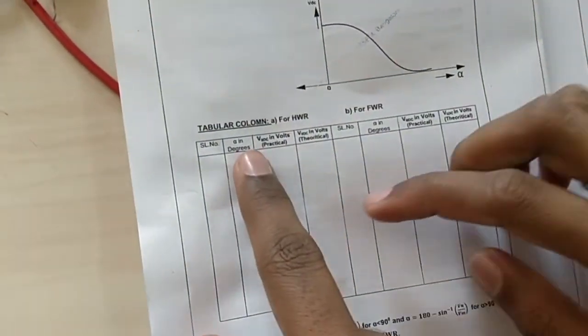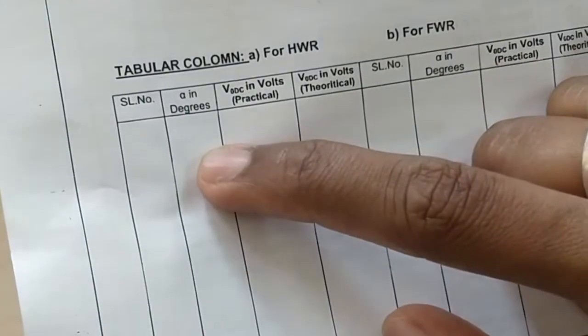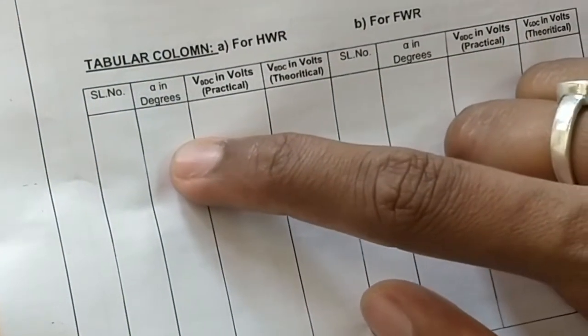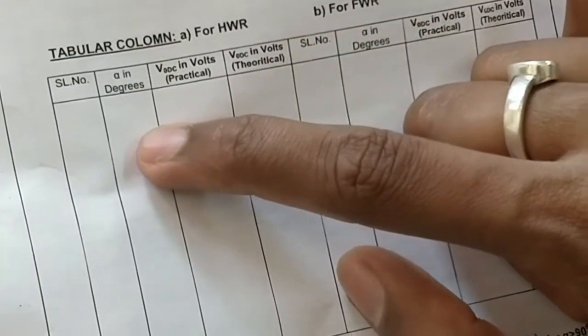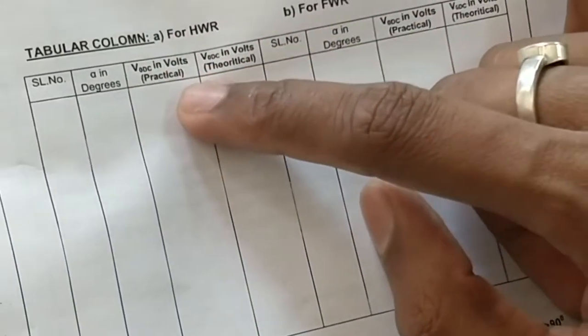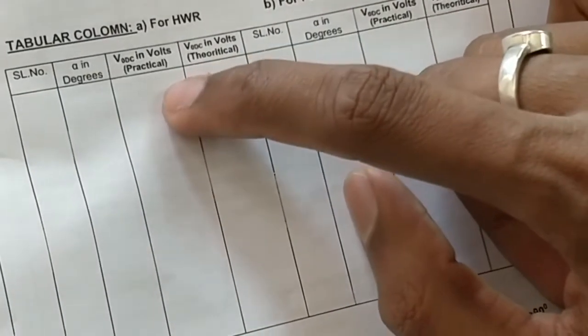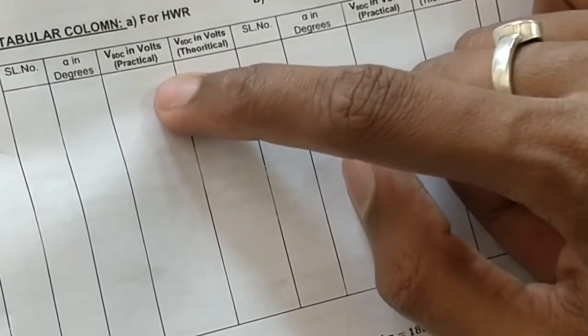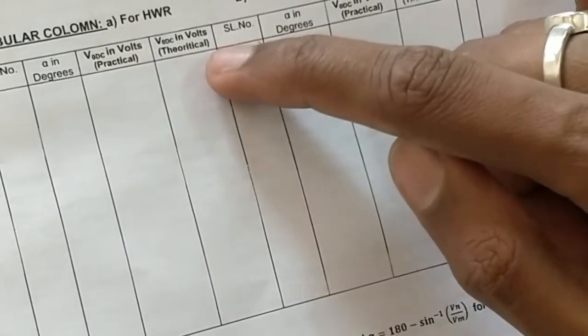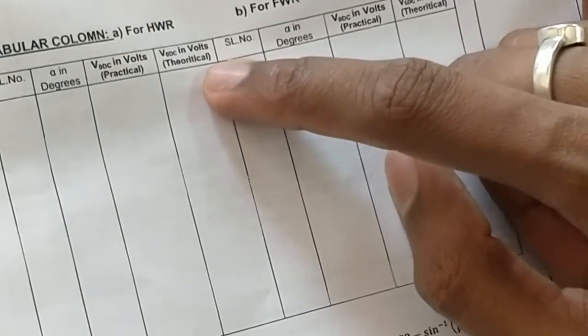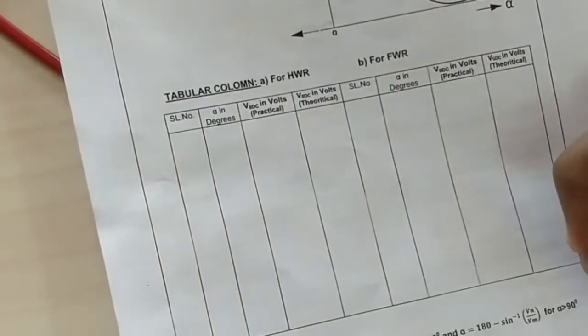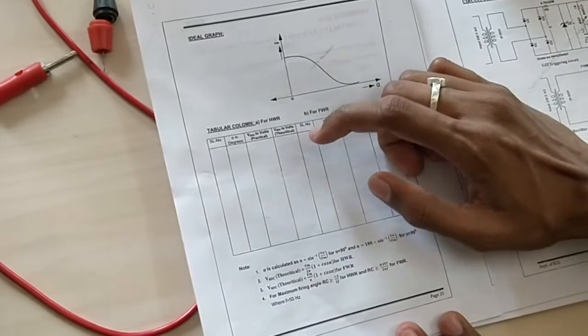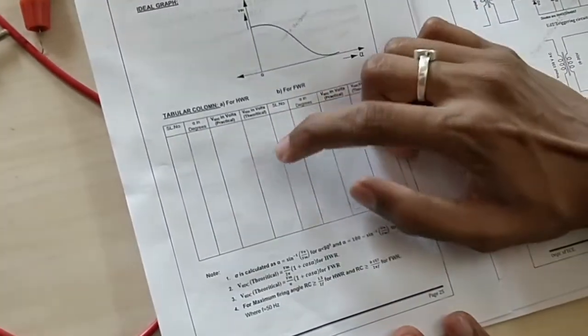In the tabular column, you have alpha in degrees, which you have varied through the DRB. You should not write the resistance; you have to write the angle: 0, 18, 36, 54, 72, and so on. This is the practical voltage which you get, which you have to measure through a voltmeter, that is DMM. Then you have to calculate the theoretical value. Make sure you put the DMM to DC mode while measuring everything.